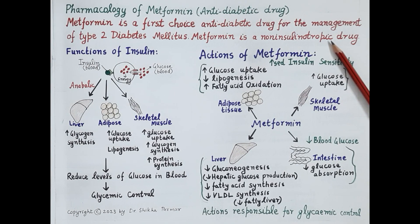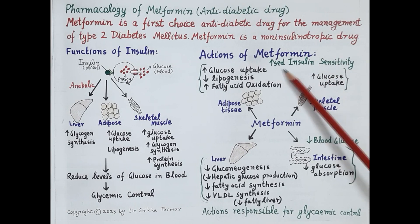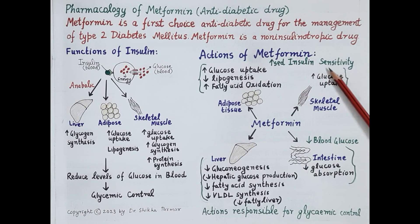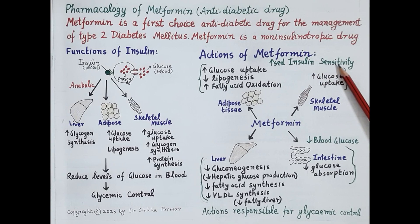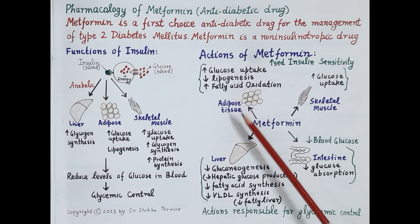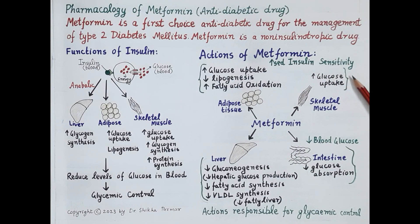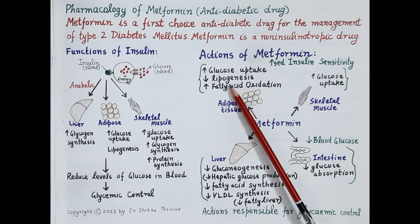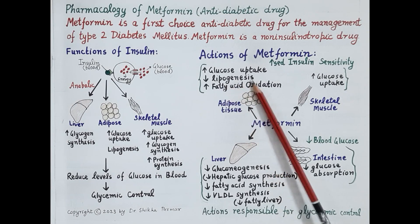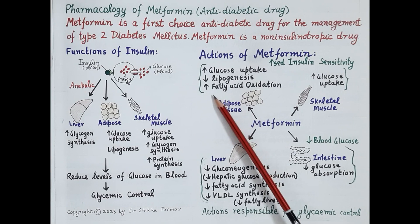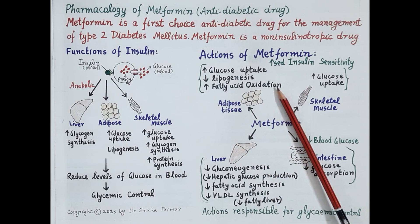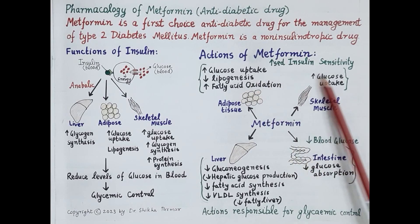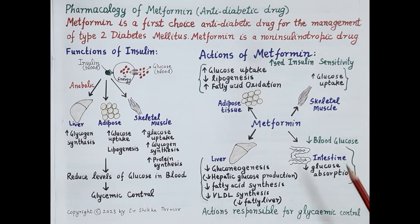Metformin reduces blood glucose levels by increasing insulin sensitivity. It improves the functioning of insulin and thereby reduces insulin resistance. Due to increased insulin sensitivity, uptake of glucose by adipose tissue and skeletal muscles increases. It also reduces synthesis of lipids in the adipose tissues — that is, it inhibits lipogenesis — and also increases oxidation of fatty acids. In addition to increasing glucose uptake, metformin also reduces absorption of glucose in the intestine. All these actions reduce the level of glucose in the blood.